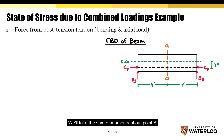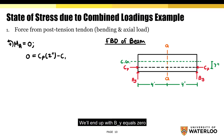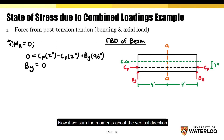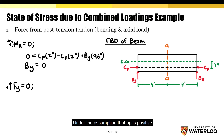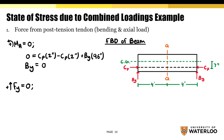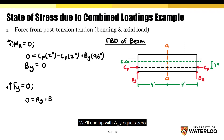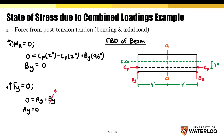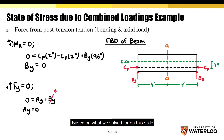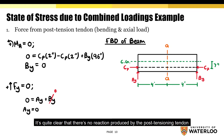Now let's move on to the support reactions. Taking the sum of moments about point A, with counterclockwise positive, we get BY equals zero. Summing forces in the vertical direction with upward positive, we get AY equals zero. Based on these results, it's clear that there is no reaction produced by the post-tensioning tendon.